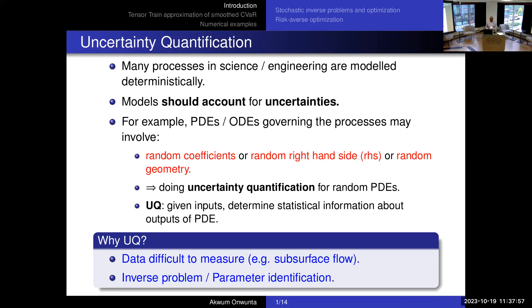Many problems in scientific computing and engineering are modeled deterministically, but it's very reasonable to take into account uncertainties, especially when we don't know exactly the parameter values in the model — so it's good to model them as random variables. For example, if a process is modeled using a PDE, the coefficients, the right-hand side, or even the geometry can be modeled as random. This leads to uncertainty quantification for the random PDE. We want to determine statistical information about the outputs — most times we're not interested in the solution itself, but in its expected value or variance.